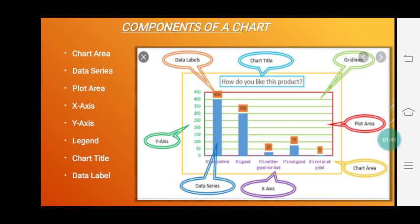Chart area: The chart area is the entire chart with all its elements. Data series: Data series is the collection of related values from the worksheet that can be data from one row or column on the worksheet. Each data series in a chart has a unique color or pattern. We can plot one or more data series in a chart.